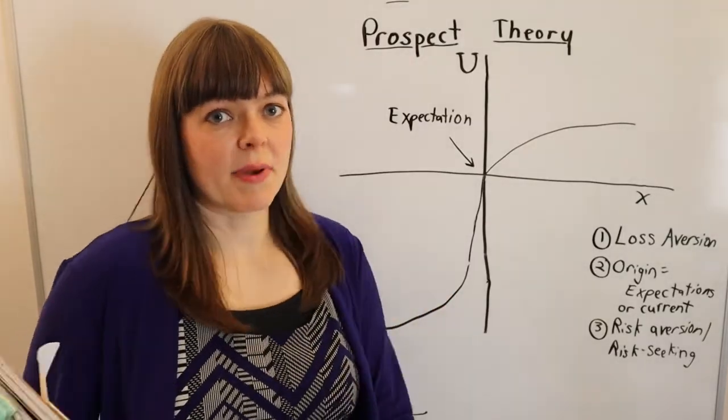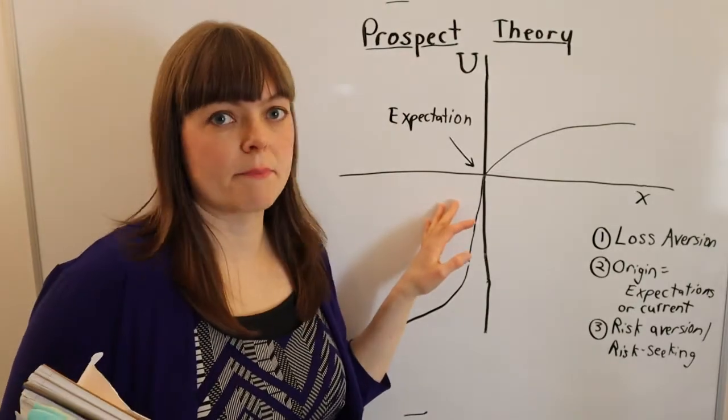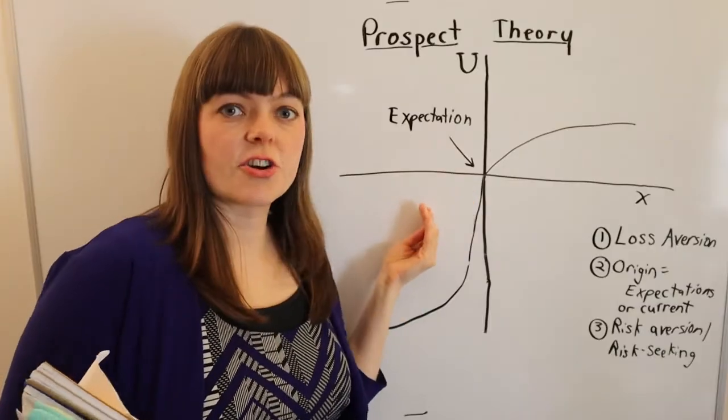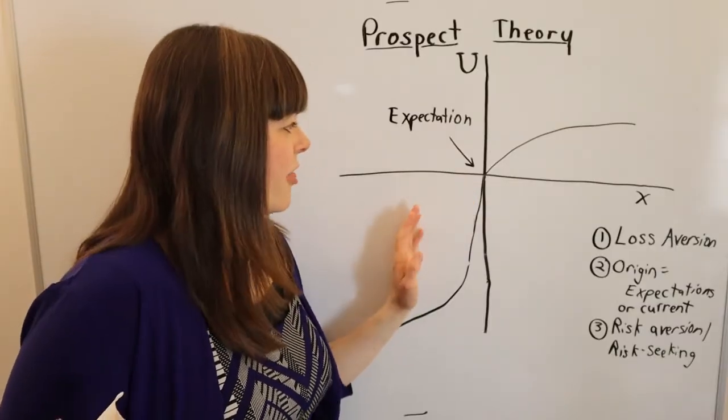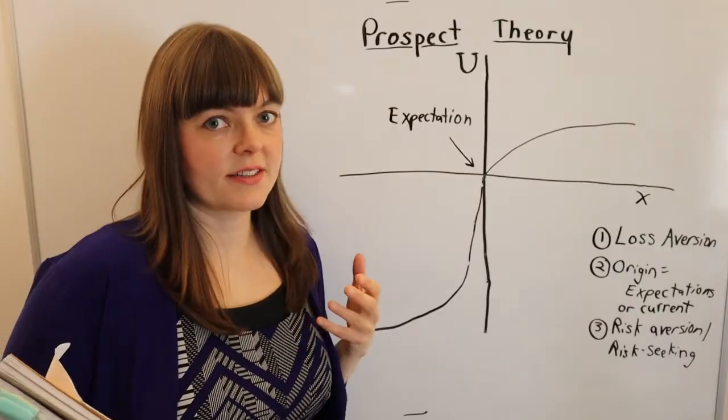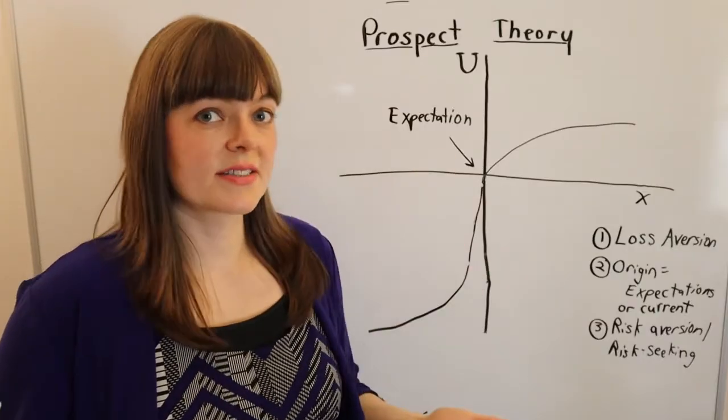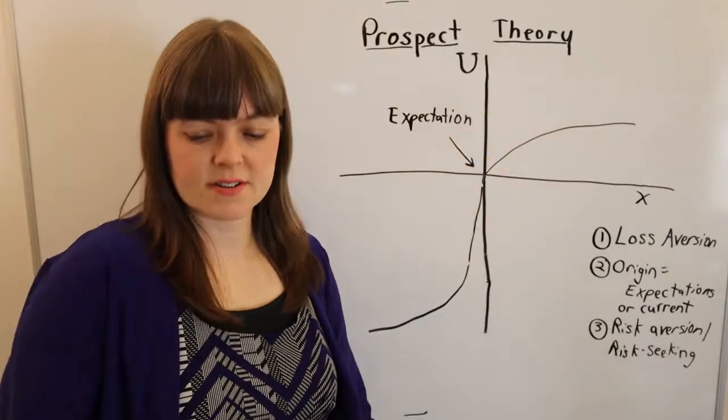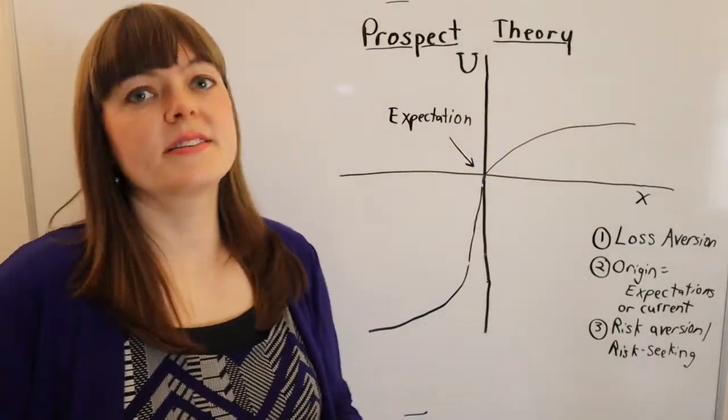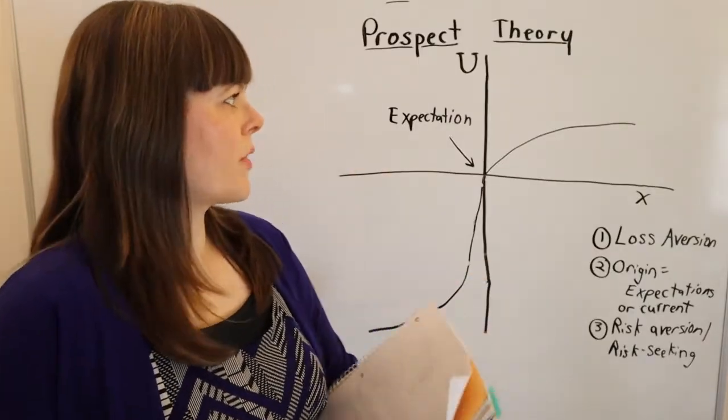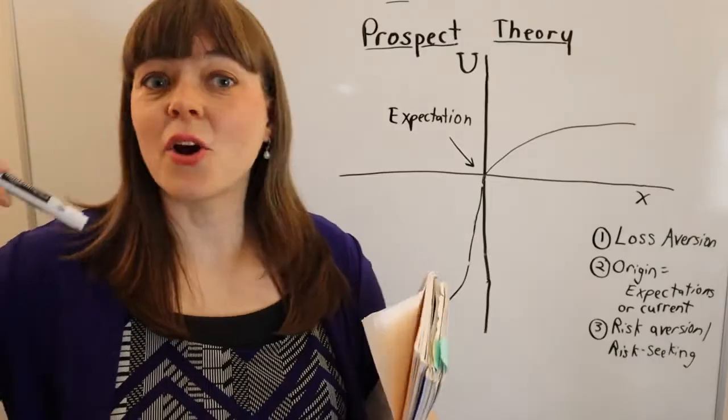in which case that could help to explain why we sometimes see more risk seeking behavior among very low income people is that they already feel like they're constantly behind, like they're in this third quadrant naturally, and they're trying to get back to zero. And when people are trying to get back to zero, they will take risks that they wouldn't take if they felt like they were in the positive quadrant.